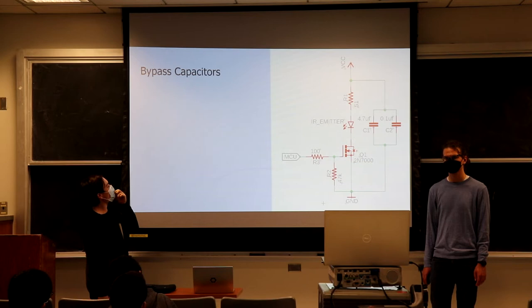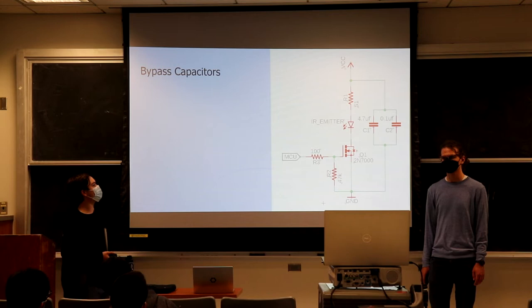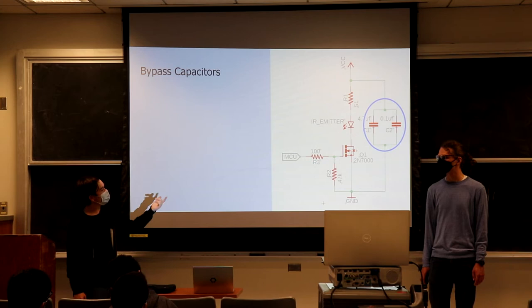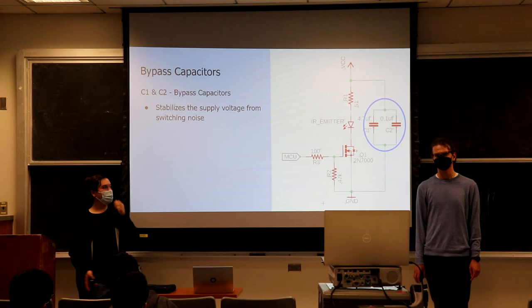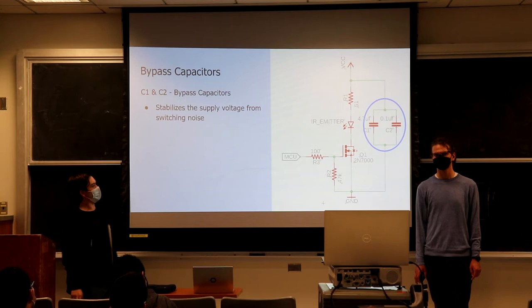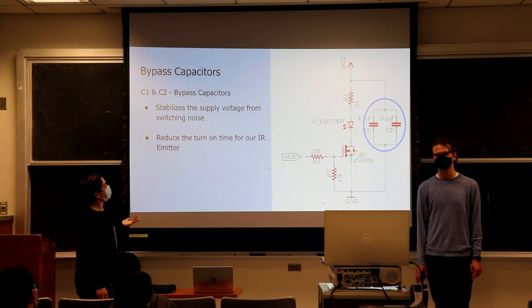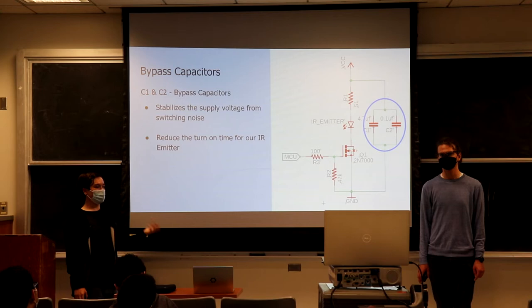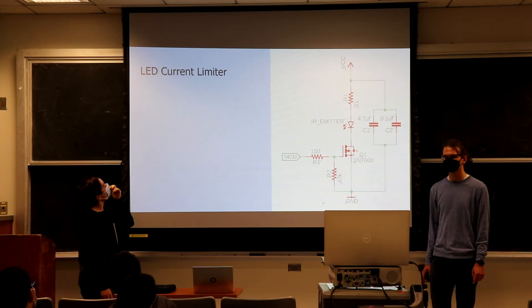The next components are these capacitors — C1 and C2 — which are bypass capacitors. They're essentially stabilizing the supply voltage from our switching and from our LED. When we turn on the LED, there's going to be a little bit of a drop in voltage, and we're trying to smooth that out. The other thing they're also useful for is reducing our turn-on time for our IR emitter, so we can record as many readings as fast as possible.